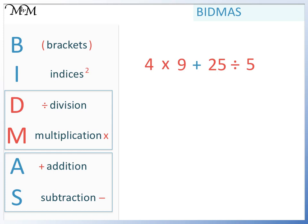So we start with 4 times 9. 4 times 9 equals 36. 25 divided by 5 equals 5. 36 add 5 equals 41.